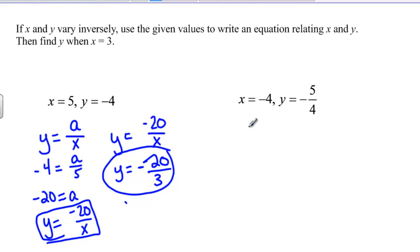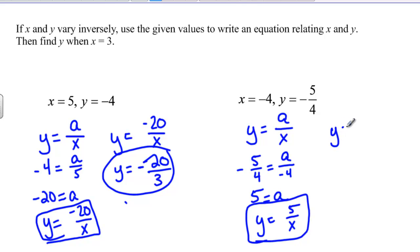Over here we have a similar type situation. Again we say y equals a divided by x because they vary inversely. Plug in what we know: negative five fourths equals a over negative four. When I multiply both sides by negative four I actually get five and that's what a is equal to and so my equation is going to be y equals five divided by x. Then I plug in three and I say y equals five over three and that's what I get for y.